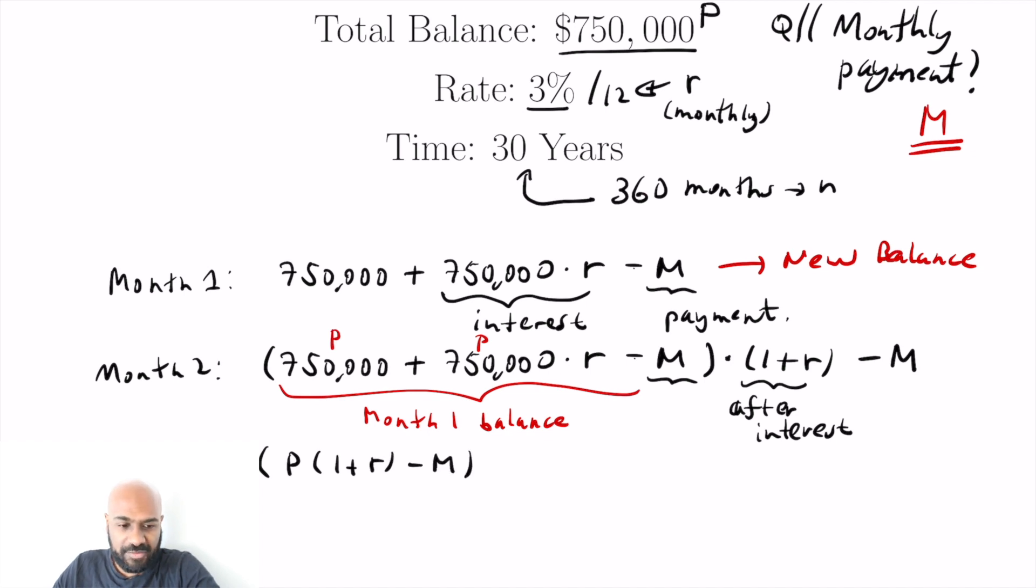and then figure out what that must say about what the monthly payment is. So if you look at that first expression for the balance at the end of month one, it's our principal times one plus our rate. And then we, that's how much our balance of the mortgage is at the end of the first month. But then we subtract M for a monthly payment.